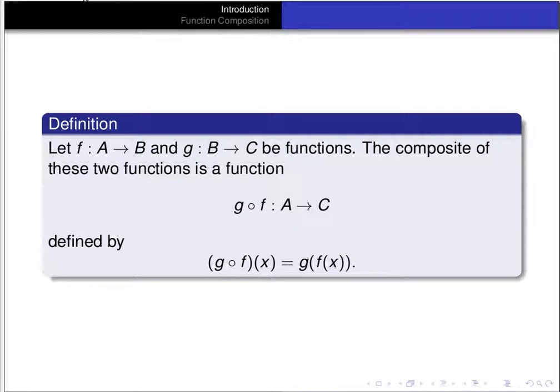Now we'll define the composition of two functions. If f from A to B is a function and g from B to C is a function, the composite of these two functions is a function g ∘ f from A to C, defined as follows: g ∘ f of x is g applied to f(x). So we take x, compute f(x), and then compute g of that value — g(f(x)).